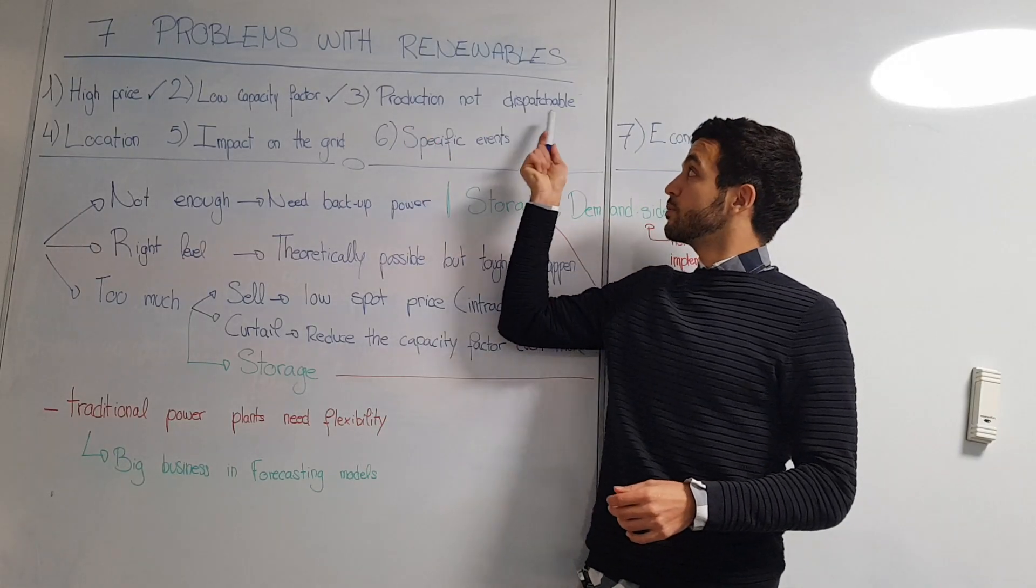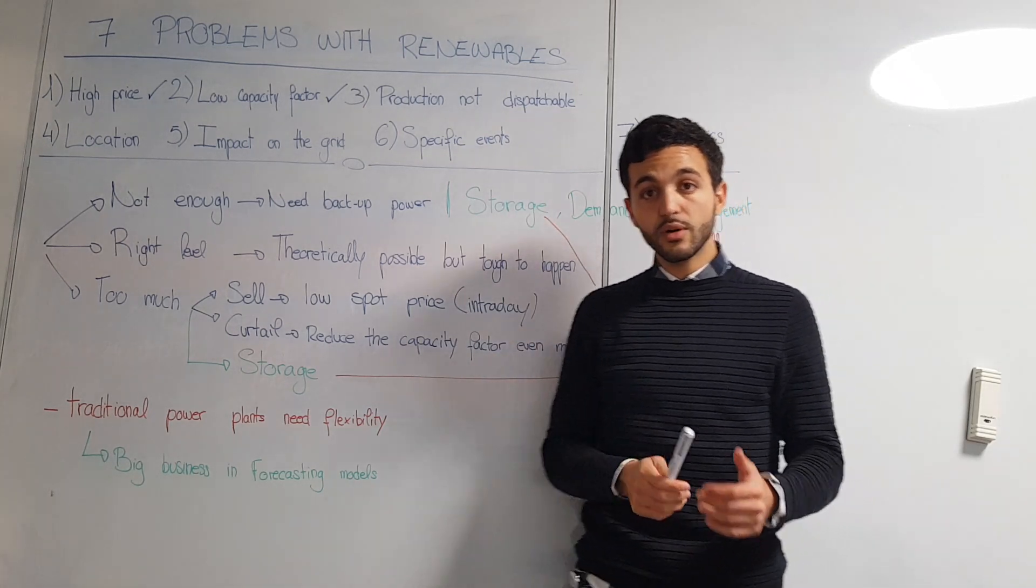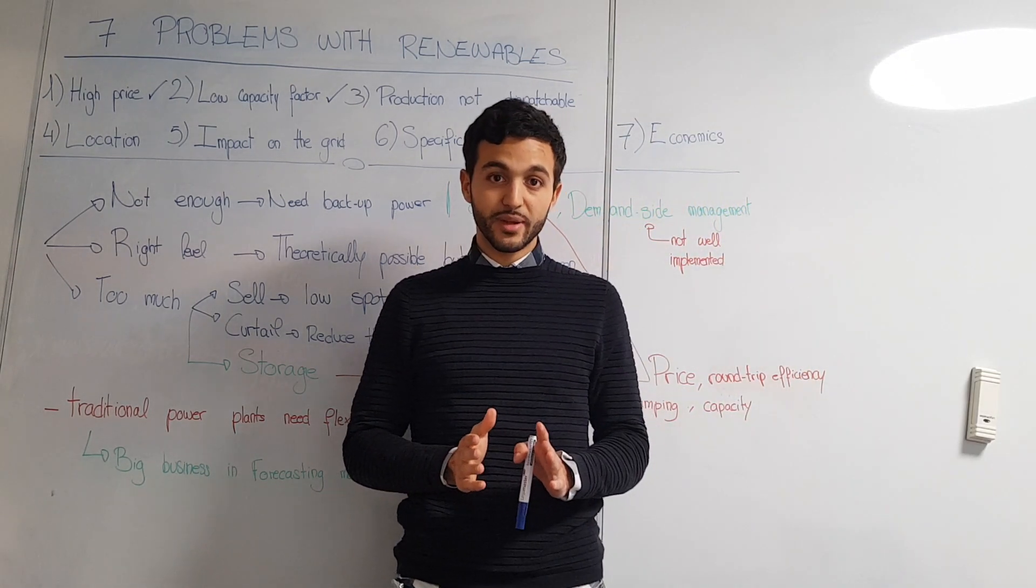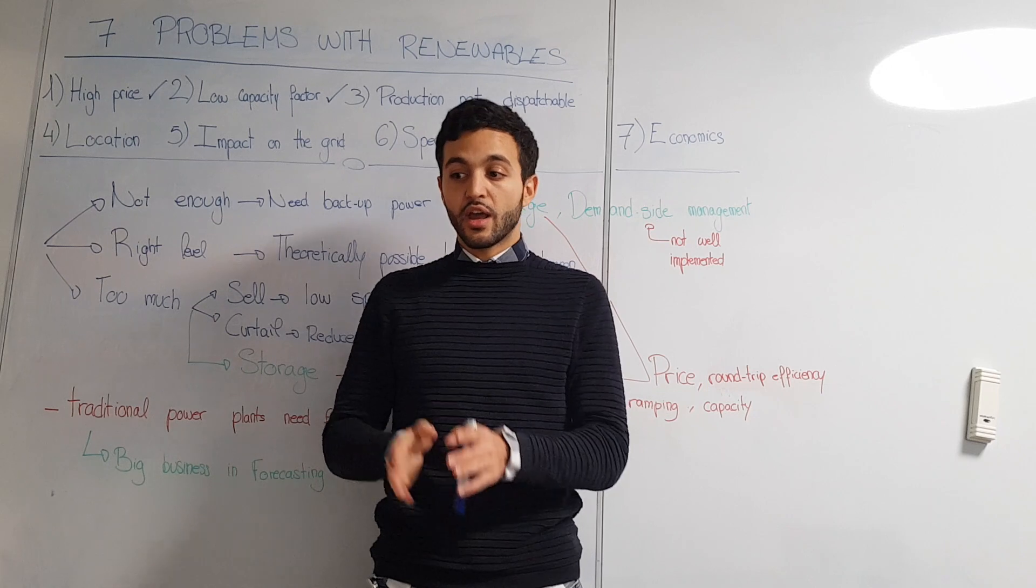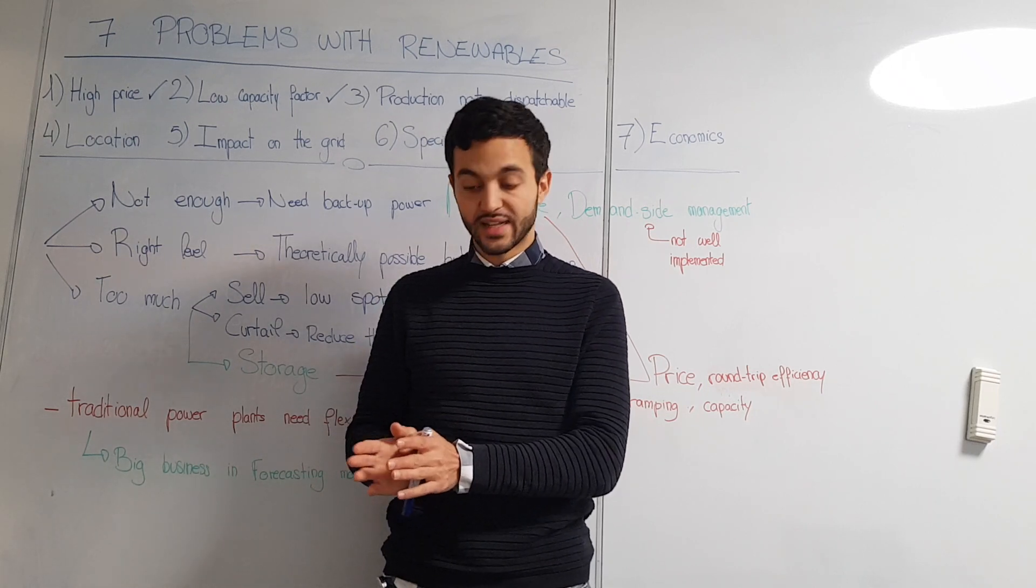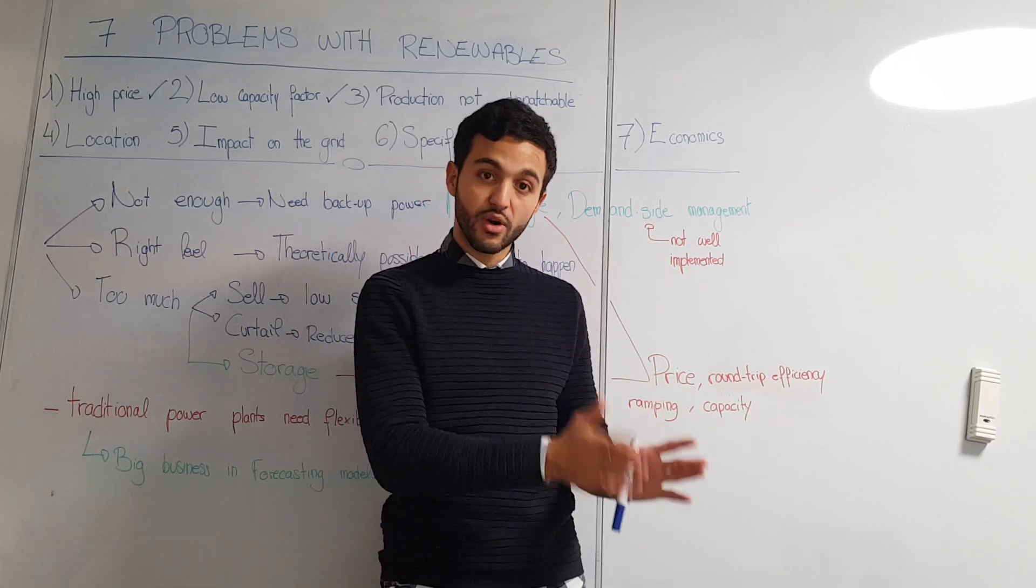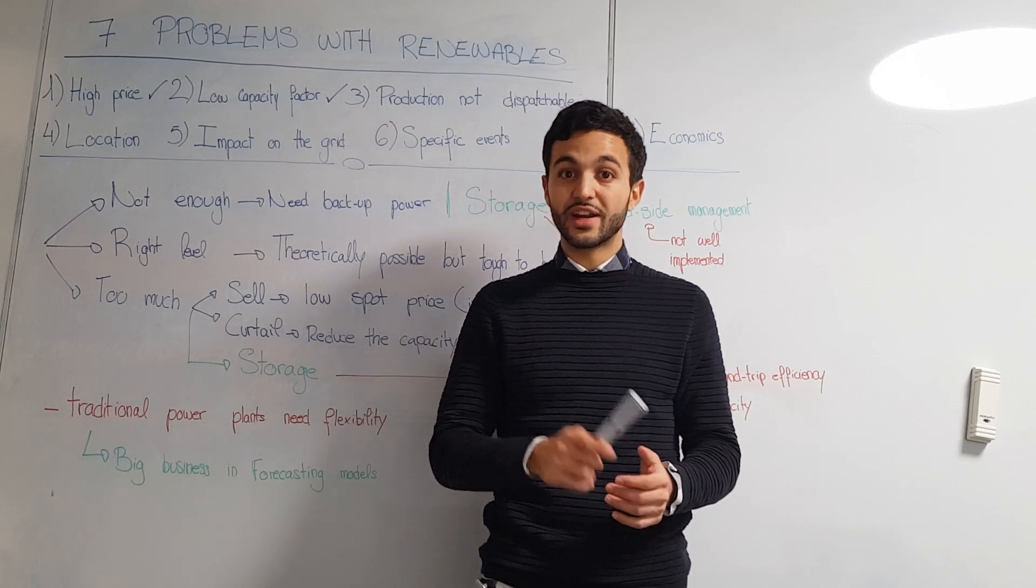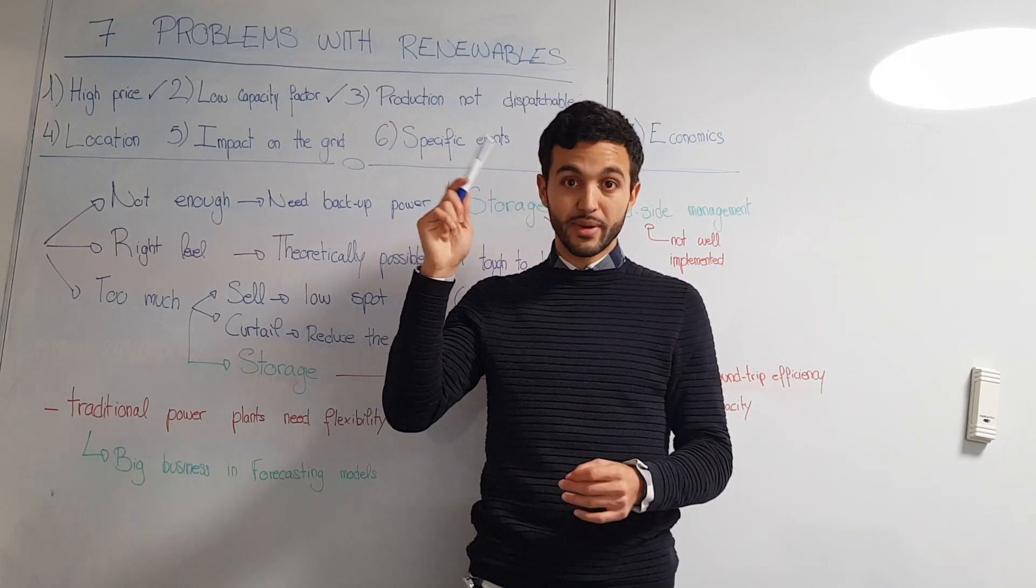Now we get to the third point: production not dispatchable. When you talk about dispatchability in the energy sector, it means you have control over the production of your assets. You can say either I produce or I don't produce. With renewables you cannot do that because your production will depend on weather conditions.